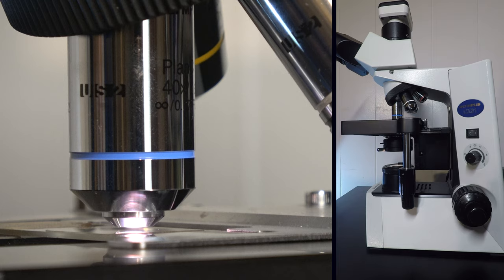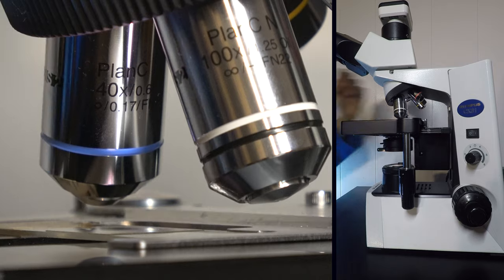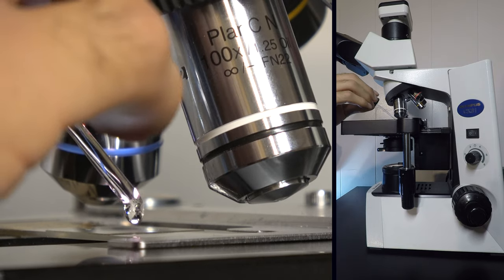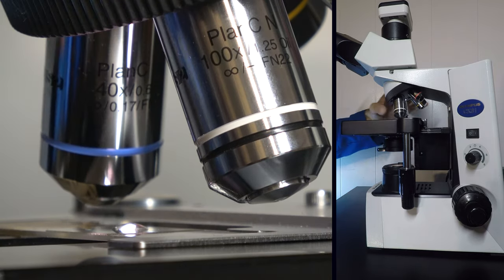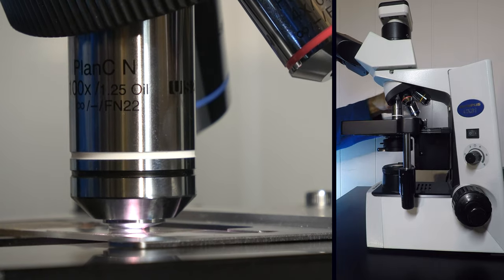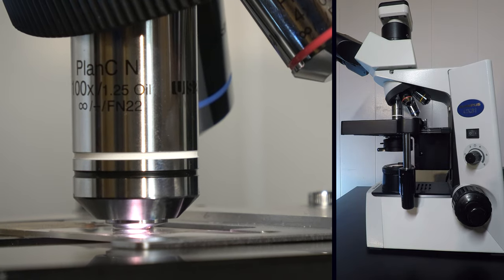Let's go back to the 40x. When transitioning to the 100x, move the turret halfway between objectives, carefully place a drop of immersion oil on the slide directly where the objective lens will sit, make sure there are no bubbles in the oil droplet, and slowly rotate the objective into place.